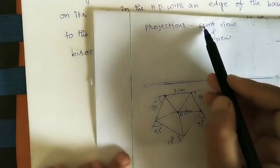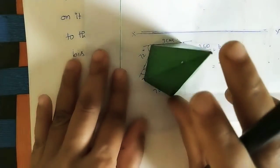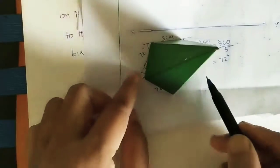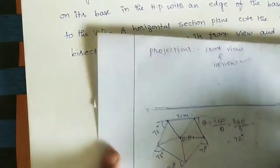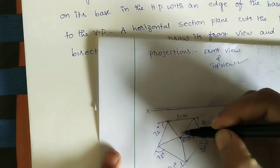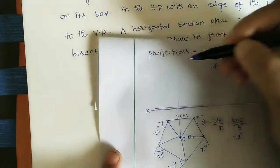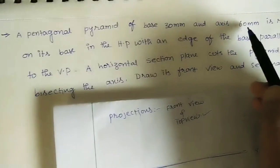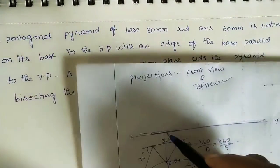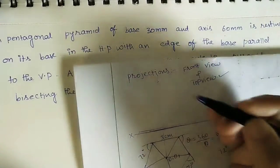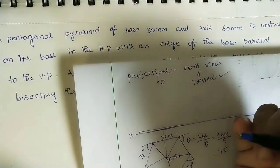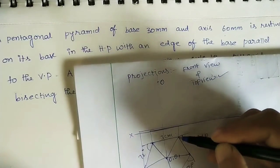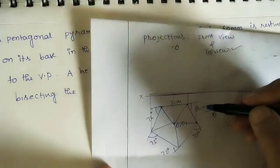In the front view we can see the entire height. First mark the height, then we can see the slant edges. At the center, draw a vertical line and from the base mark the height of 60mm for the apex. I am marking the apex as O.